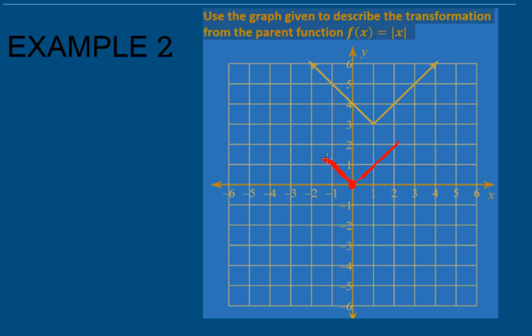So, what transformations had to take place in order to get this graph to be right here? Well, the first transformation is a shift of 1 to the right and a shift of 3 up. So, those are the transformations.